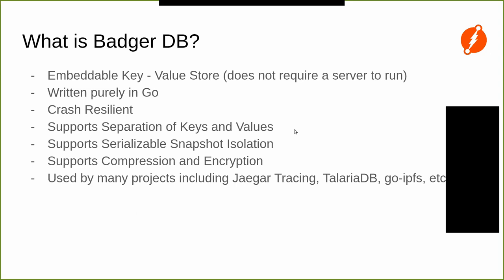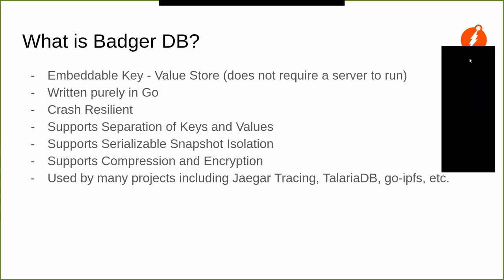We support separation of keys and values. In a typical LSM tree — the data structure Badger uses — you have keys and values. Badger supports not necessarily storing all the values in the tree as well. If your values are bigger, it becomes expensive in your reads, so Badger supports separating that. Badger also supports serializable snapshot isolation: you do a commit and the next transaction doing a read will be able to see that commit. We support compression and encryption — two compression algorithms, multiple levels of compression, and encryption so data stored on disk is protected.